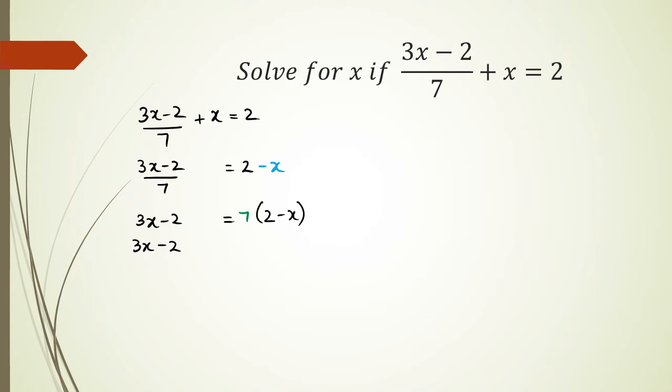From here I should be able to start seeing things a little bit more clearly. I've got 7 times 2 is 14 and 7 times negative x is negative 7x.